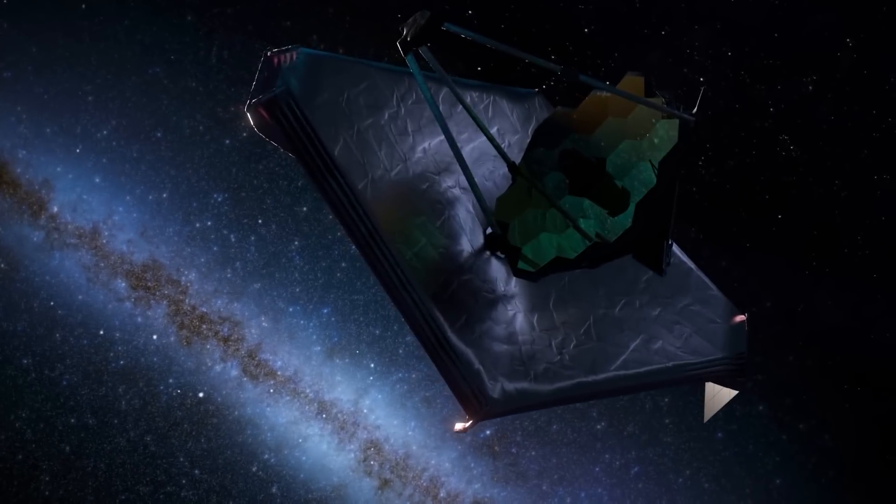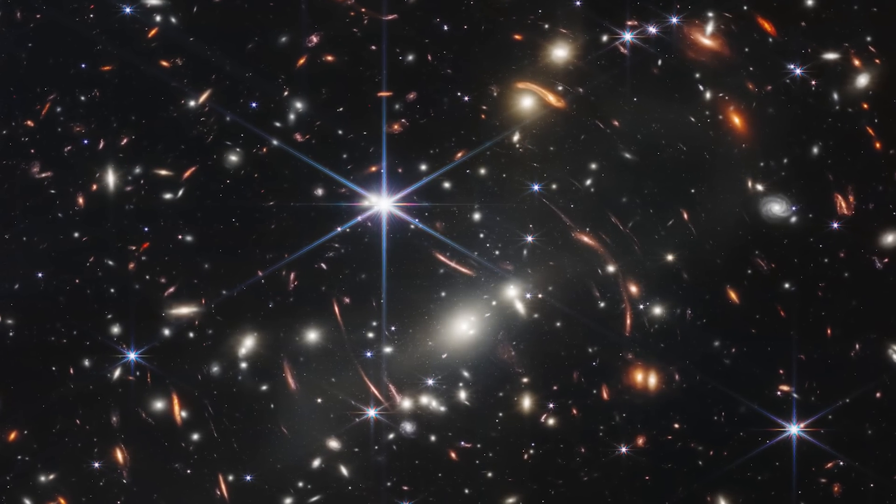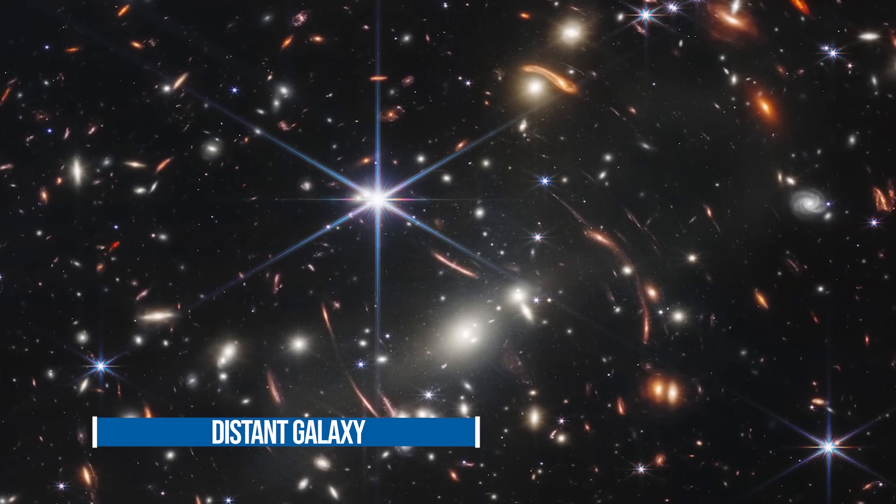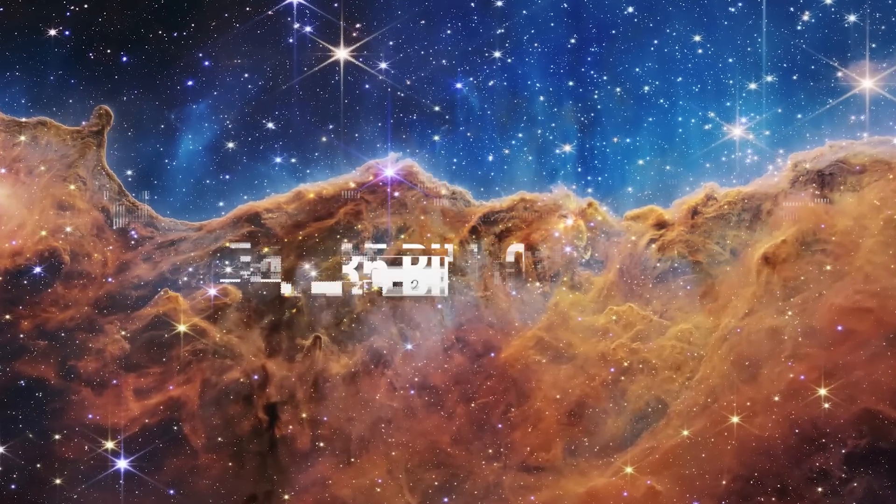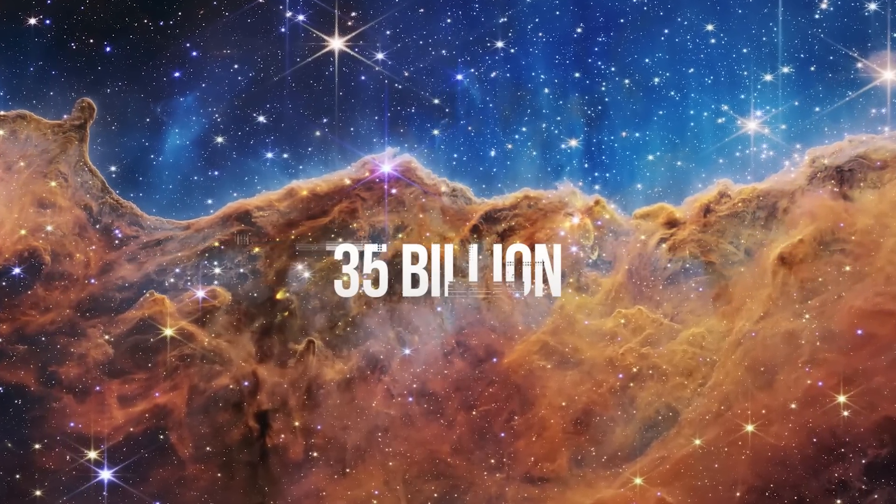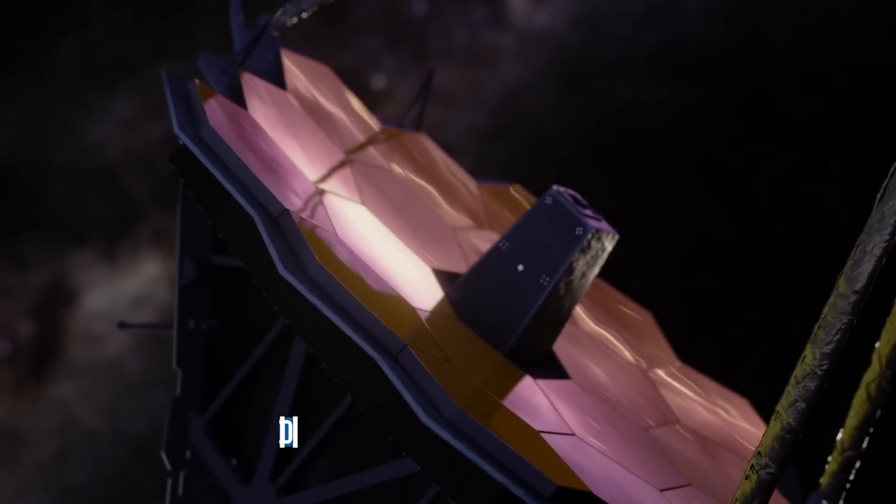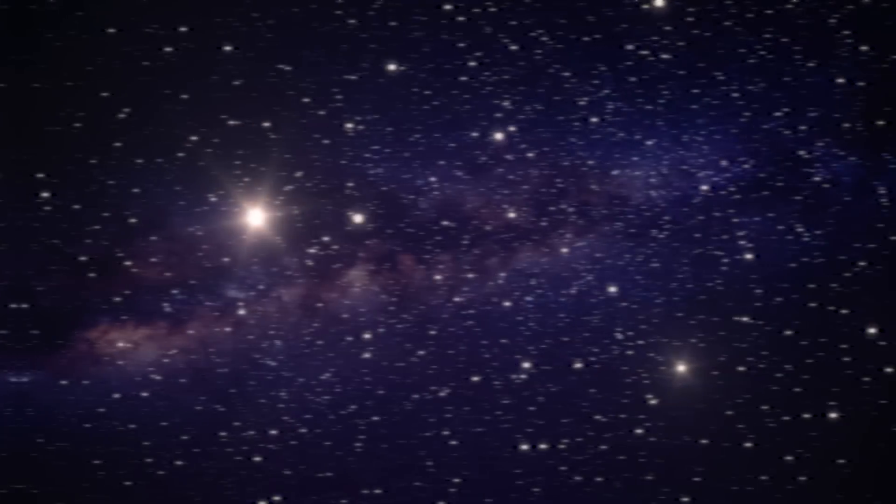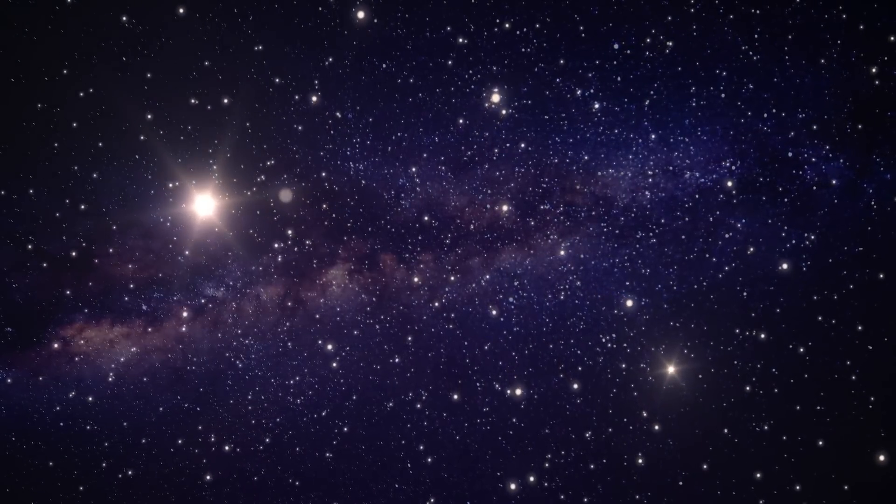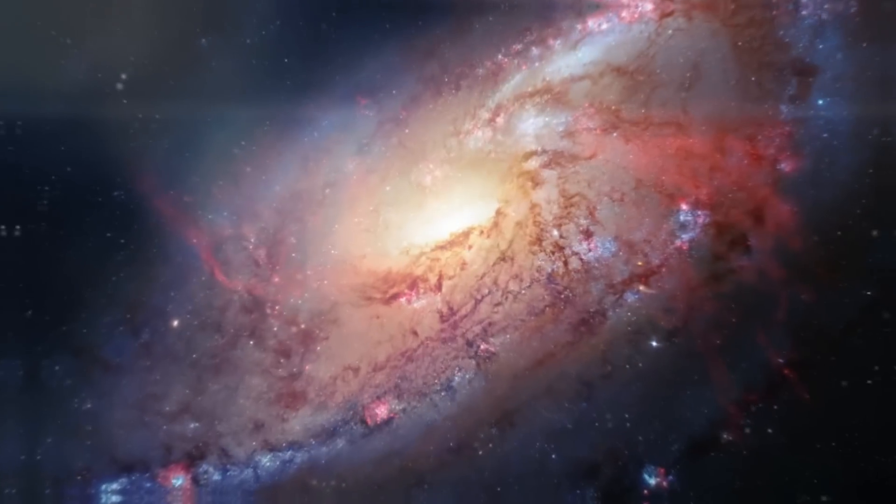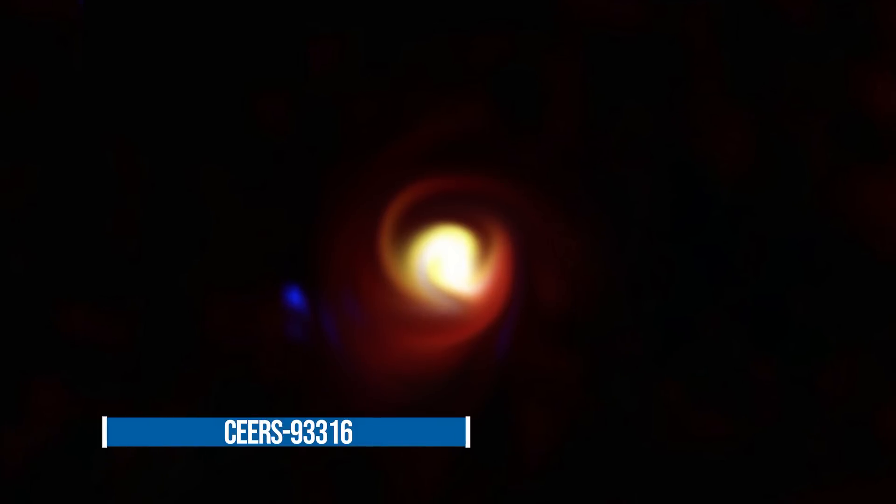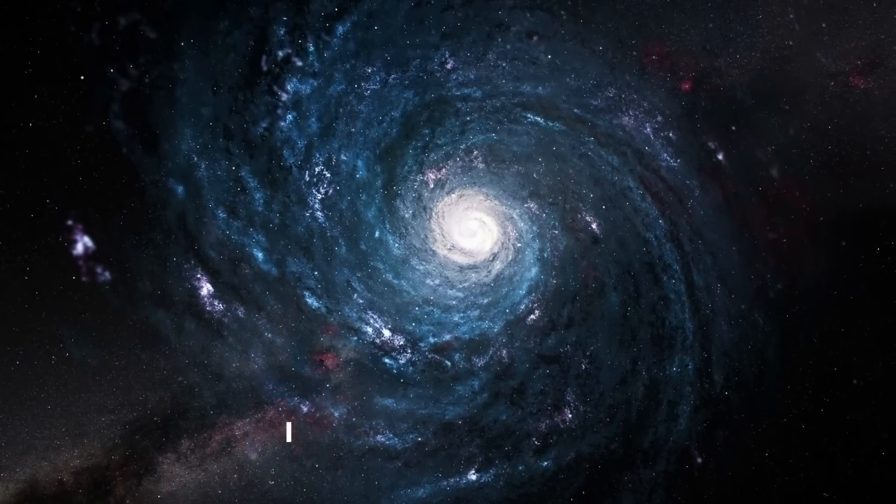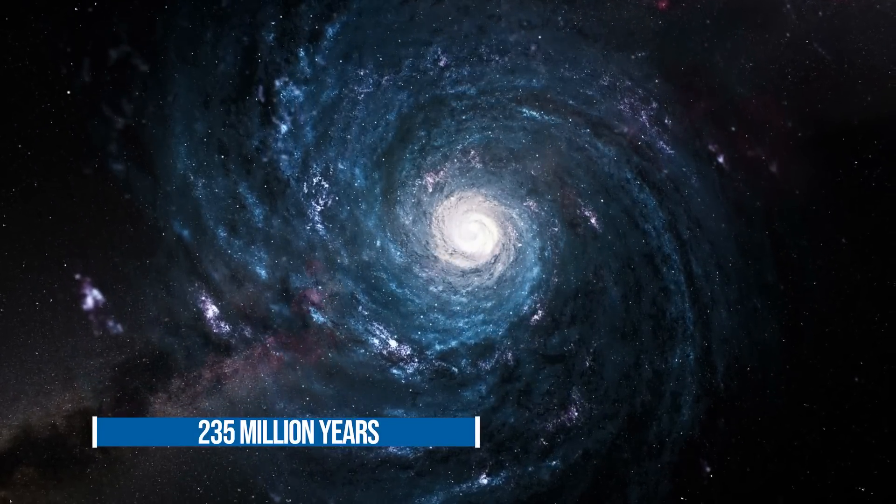Using the James Webb Space Telescope, astronomers have detected what they believe to be the most distant galaxy that has ever been observed. It is a faint red smudge that is located 35 billion light-years away. With the help of Webb's near-infrared camera, which has the ability to see the earliest flickerings of the very first stars, an image of the galaxy, which has been given the designation Sears 93-316, was taken as it appeared approximately 235 million years after the Big Bang.